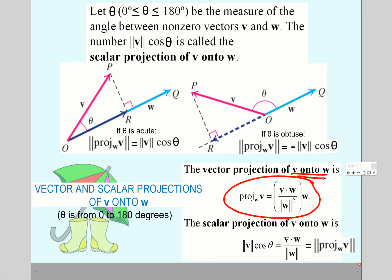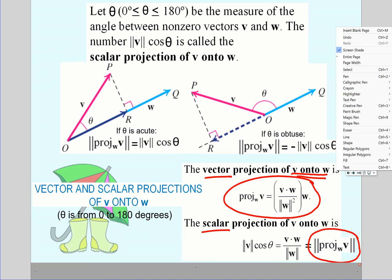You will also be asked to find a scalar projection. Scalar projection is just a fancy way of saying the length of the projection, the length of the shadow. We have a formula for it, but you don't need that. Once you find the projection, you can just find the magnitude of your projection. Vector projection is the vector itself. Scalar projection is the length of that vector. And that's what we're going to do on the next page.